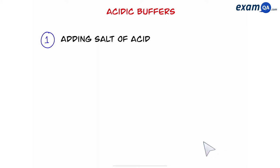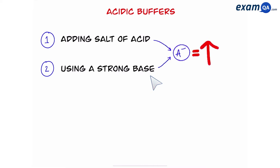Okay so to make acidic buffers you have two options. Number one, we're going to take a weak acid and add the salt of the acid to it. And number two, we're going to take a weak acid and react it with a strong base. Both of these should give us that abnormal amount of A- that we have. And once we have that we've created our buffer.